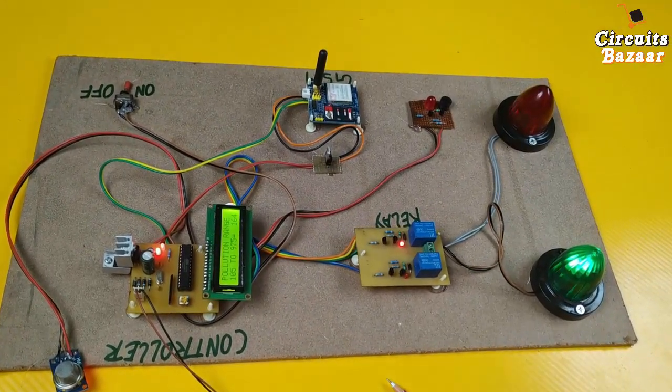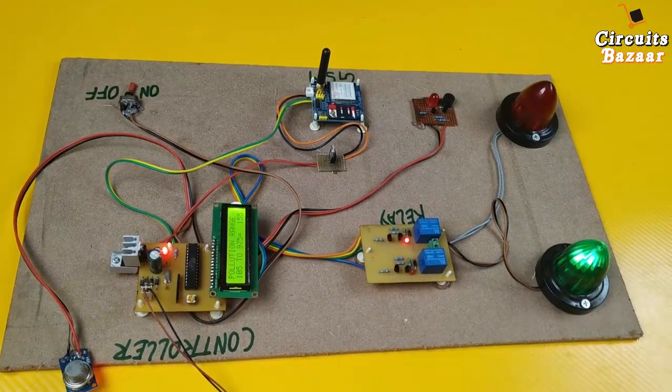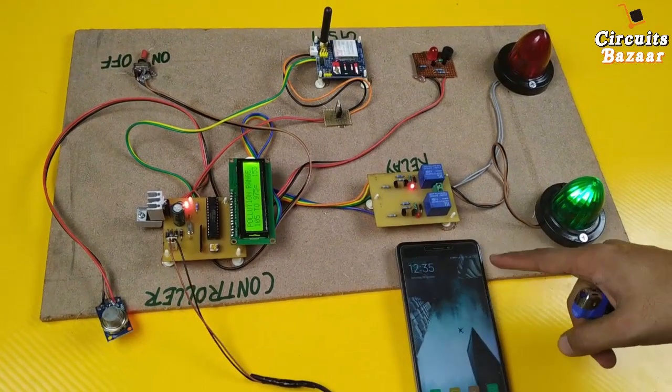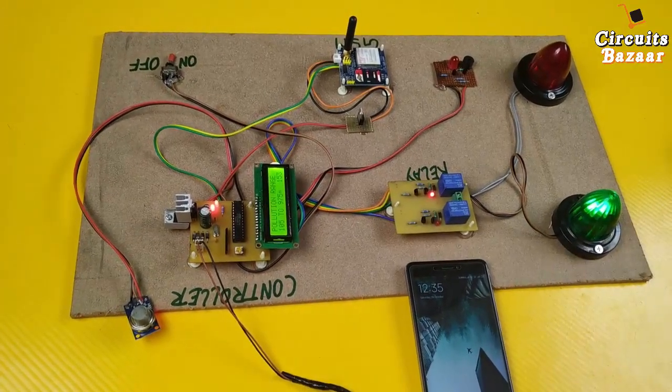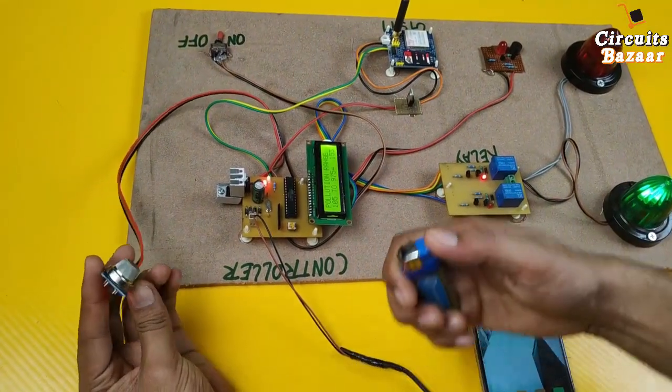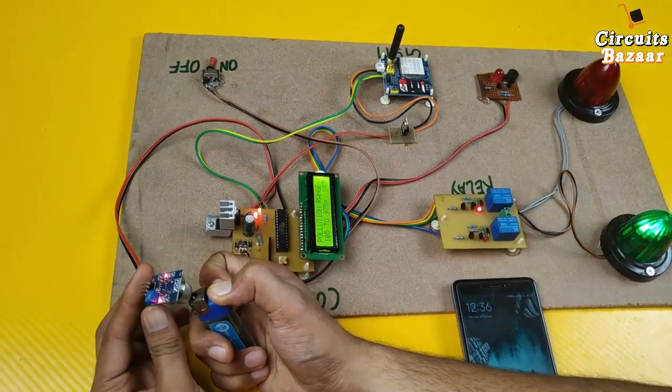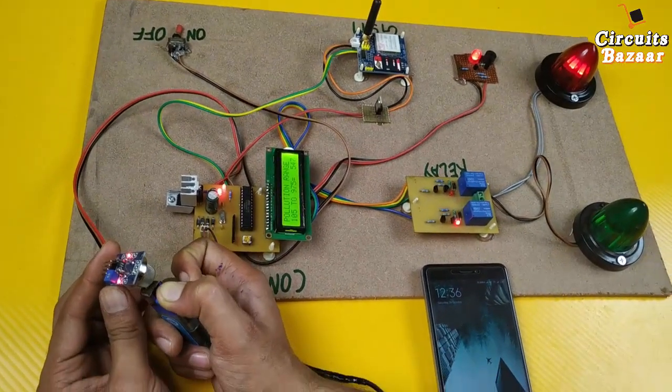Please give me your mobile on which message will come. So this is the mobile of which number we have programmed. Now I'm again going to increase the pollution. Right now 155 pollution. Now you can see, now you can see indicator is on and we will get the message.